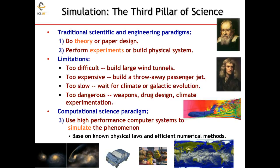Traditionally, science and engineering has followed the mold of doing theory and doing experiments by building physical systems. Certain experiments and certain theory have limitations — perhaps it's too difficult to build very large wind tunnels to test out designs, or too expensive to carry out an experiment where we would be better off doing it through simulation. Sometimes it's too slow to carry out certain events we'd like to study, like the collision of galaxies. So we use computational science to simulate things that are too hard to carry out through theory and experimentation.